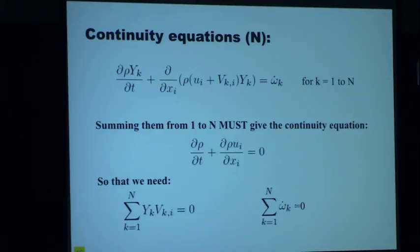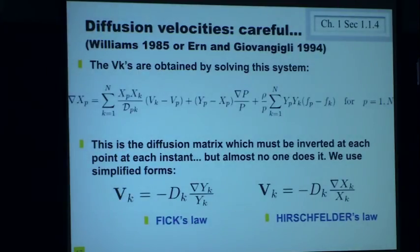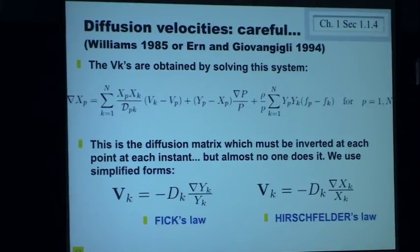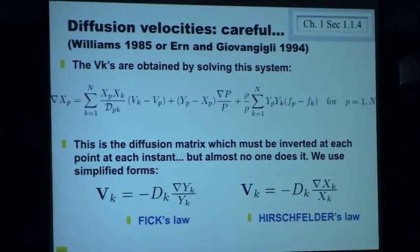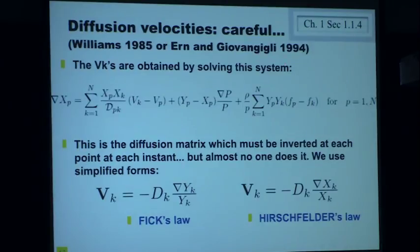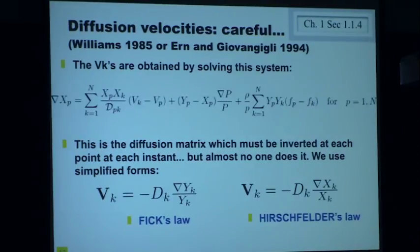The diffusion velocities come from kinetic theory of gases — you can find them in the books of Williams or Ern and Giovangigli. You get them from a large implicit equation involving the Soret effect, the Dufour effect, and other terms. In combustion, almost no one ever solves that exactly. The two classic simplifications are Fick's law and Hirschfelder's law. One is a gradient of mass fraction, the other a gradient of mole fractions. In 3D codes, Hirschfelder is better — it is actually the best first-order solution and what you should have in your code.